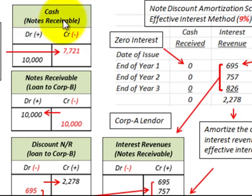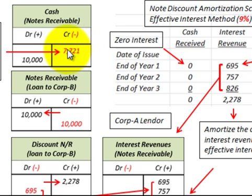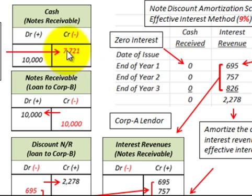Now for the journal entries, from Corporation A the lender's perspective: we credit cash by the present value of the zero interest note, $7,721, and debit notes receivable for $10,000.